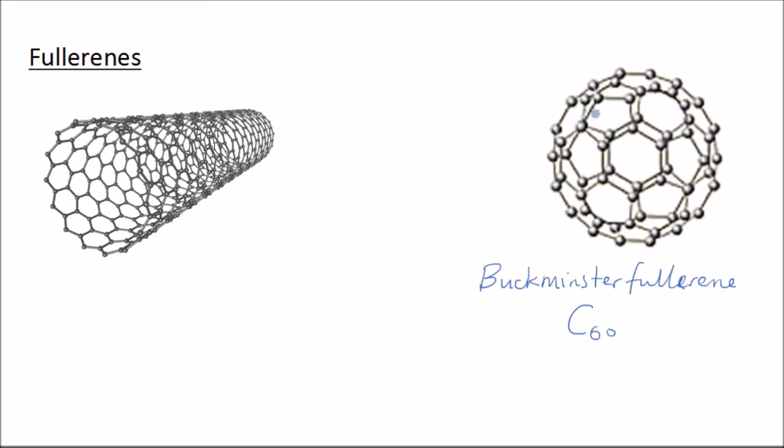If we take a look at Buckminsterfullerene, we see that it's made up of a series of pentagons with five sides and hexagons with six. So it's a bit like a football.